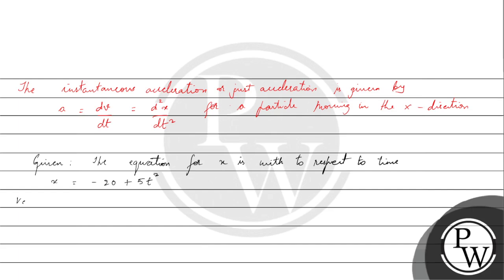Velocity is v equal to dx by dt, toh is x ki equation ko differentiate karenge: d by dt of (minus 20 plus 5t squared). Kyunki 20 constant hai, it's a numerical, wo zero hota hai, aur yahan pe we have 10t.